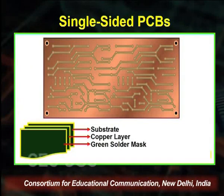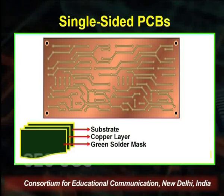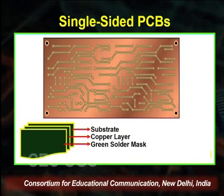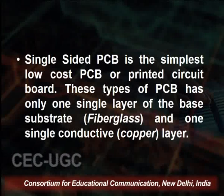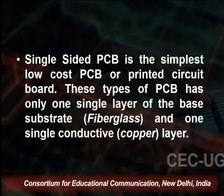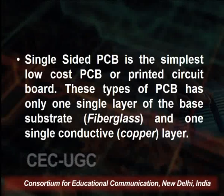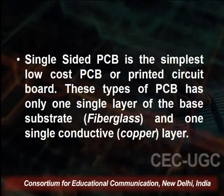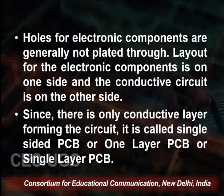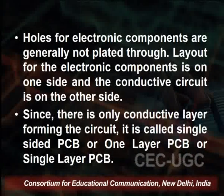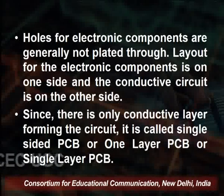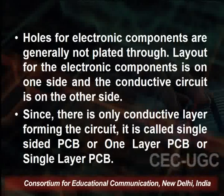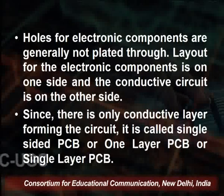Looking at the diagram, this single-sided PCB has a copper-plated surface and a substrate base. The substrate is at the bottom, the copper layer is mounted on it, and the green solder mask is used to protect the connections. Single-sided PCB is the simplest and lowest-cost type, with a single layer of fiberglass substrate and one conductive copper layer. Holes for electronic components are generally not plated through, with components on one side and the conductive circuit on the other.